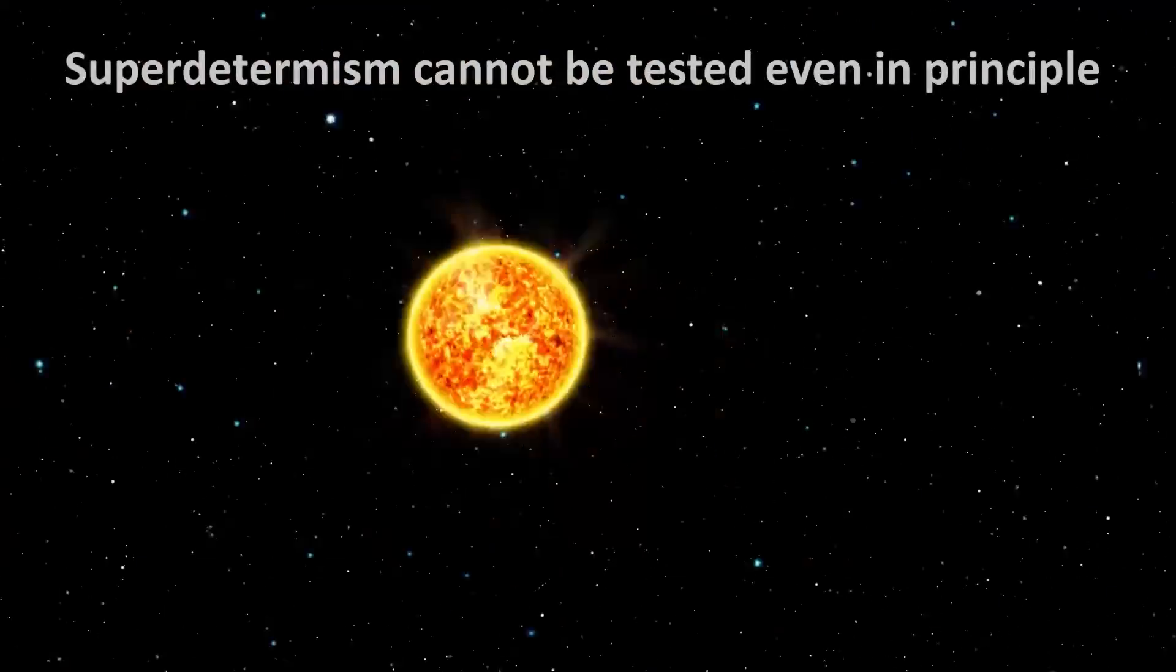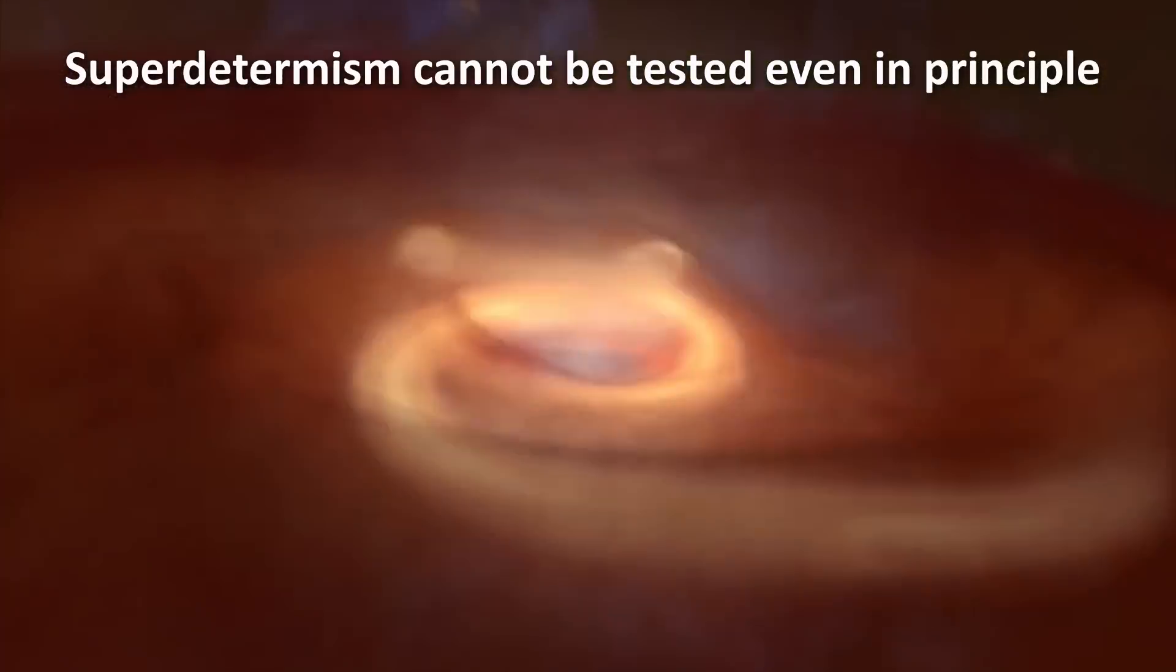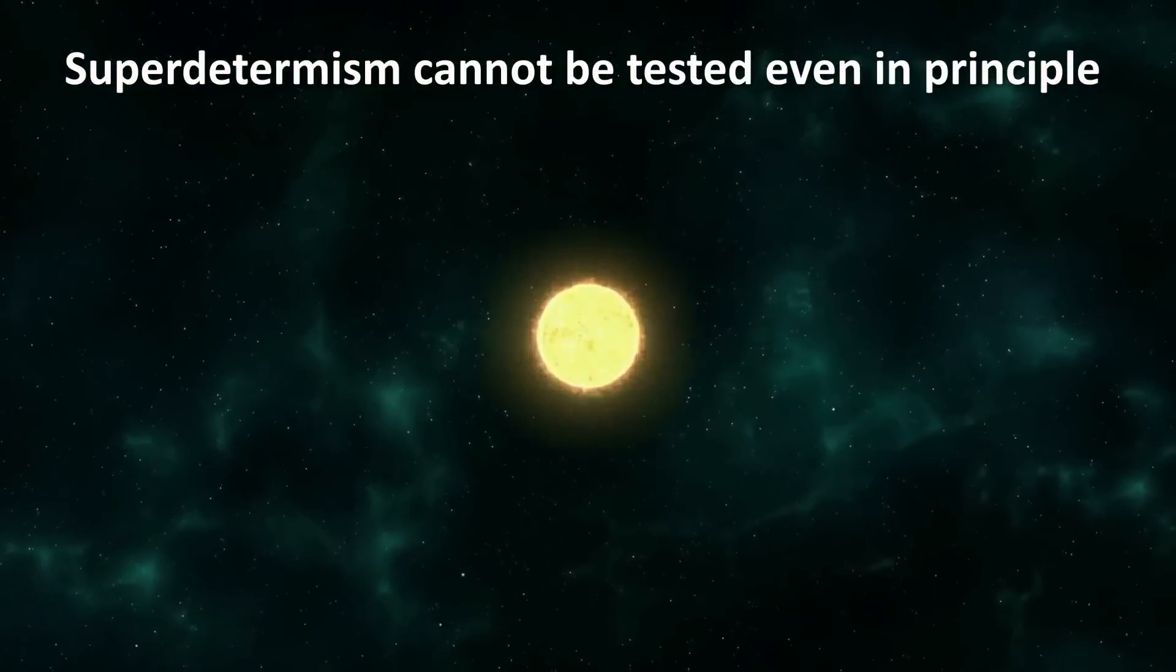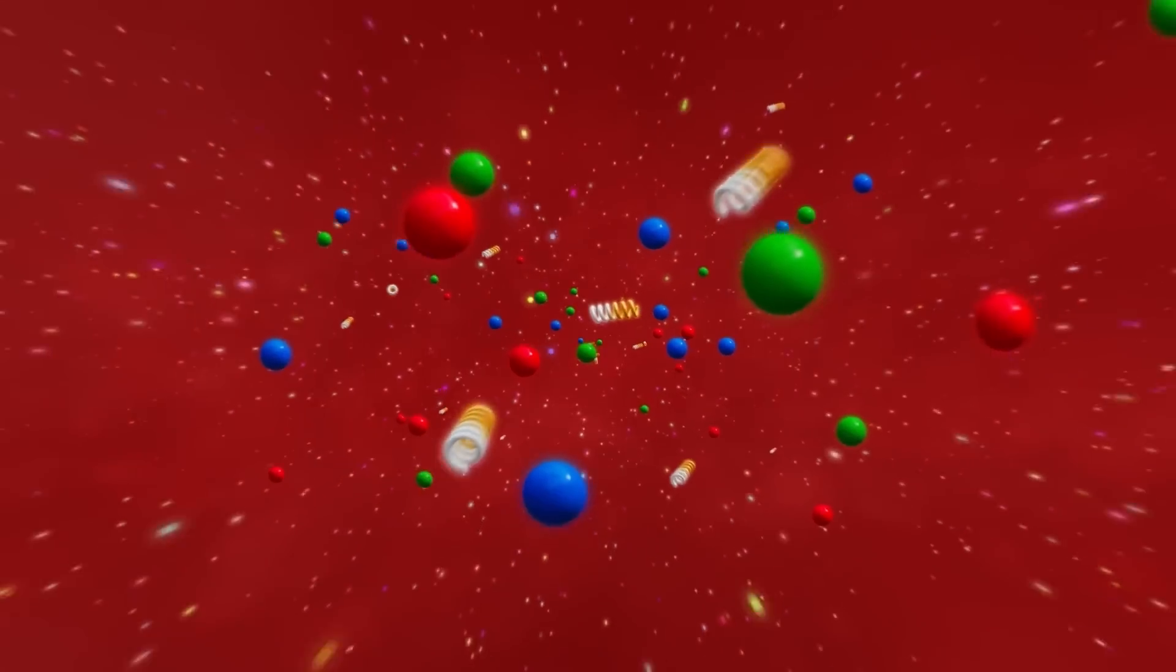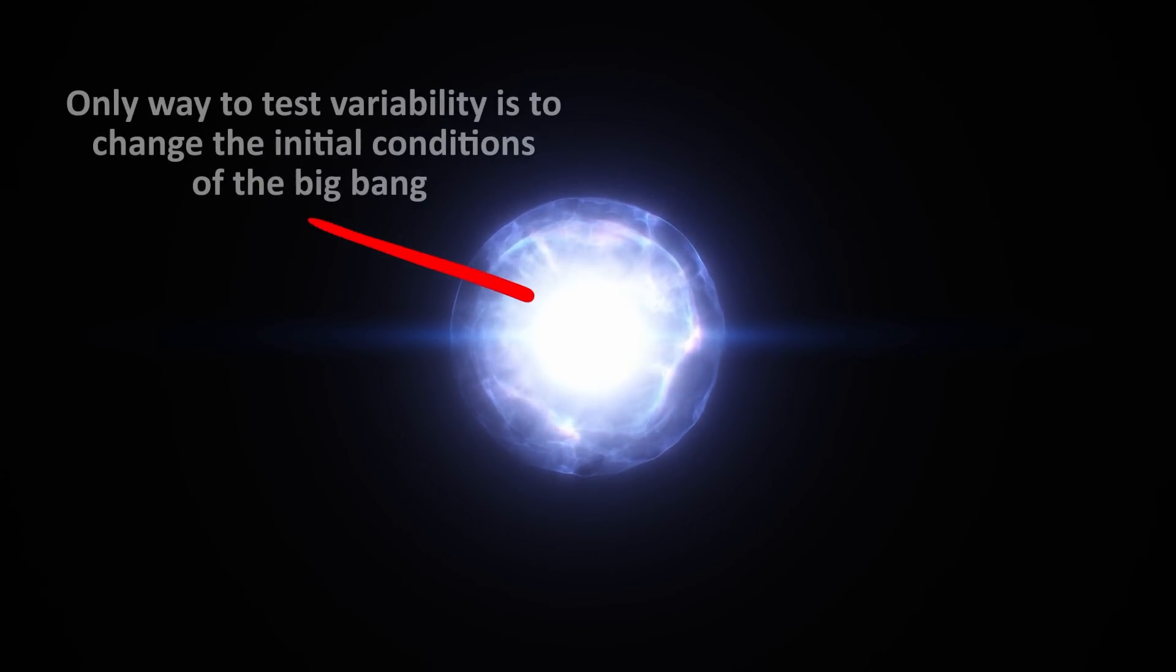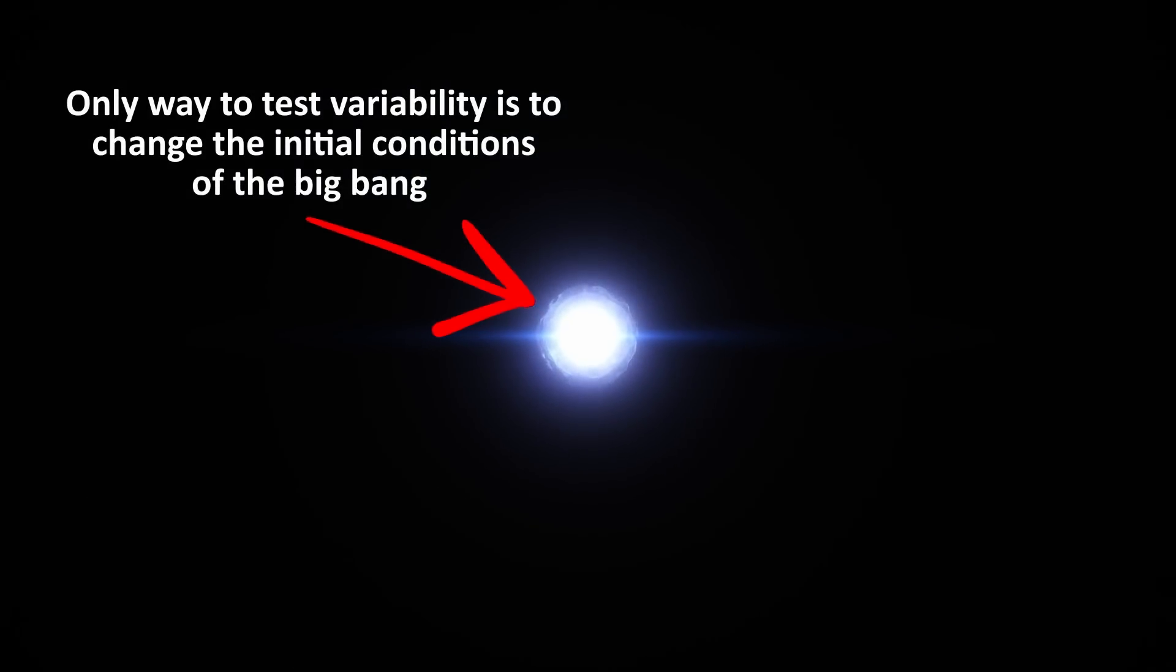Finally, to me, super-determinism cannot even in principle be tested, because the correlations, if true, have always existed since the beginning of the universe, and will always exist, allowing for no variability. The only way to change this is if there were a way to change the initial conditions of the big bang, which is not possible.